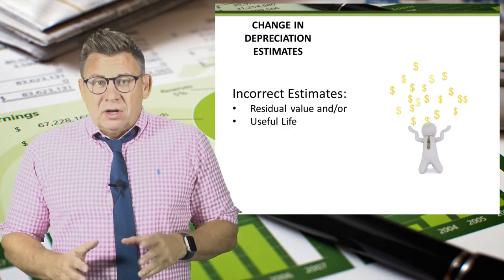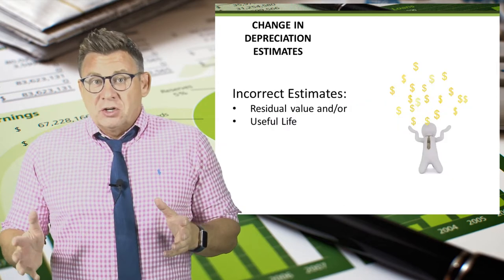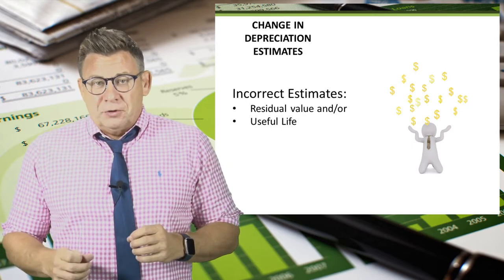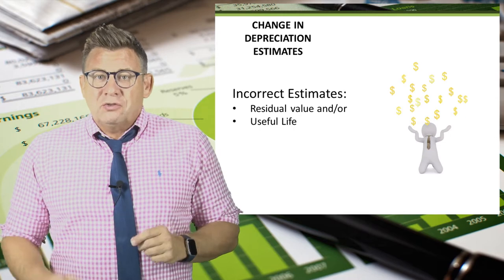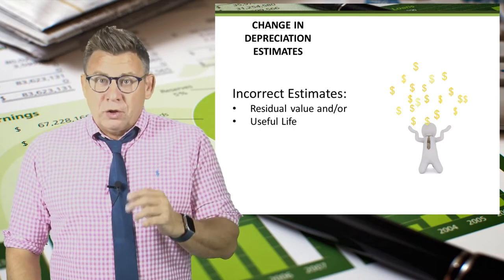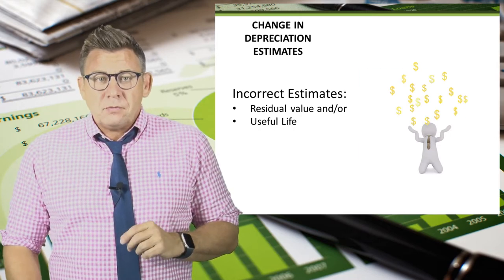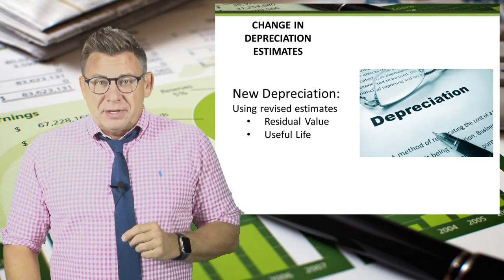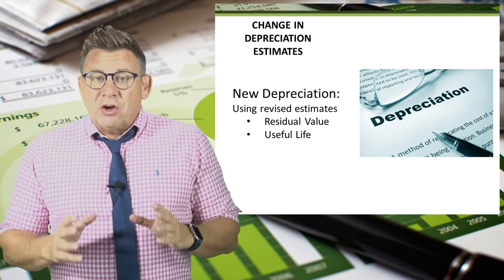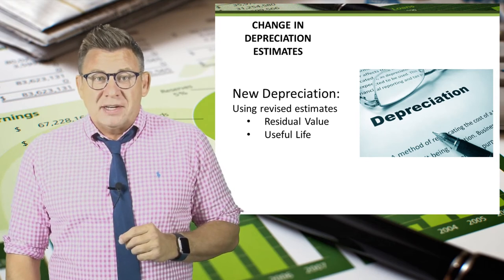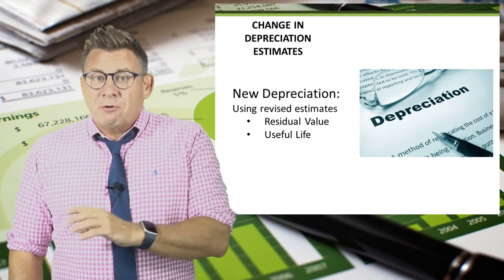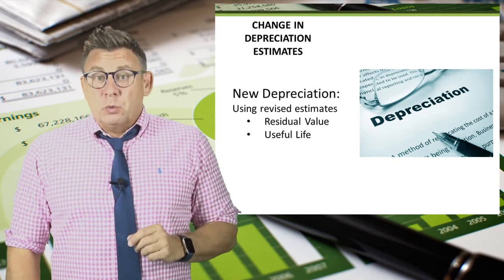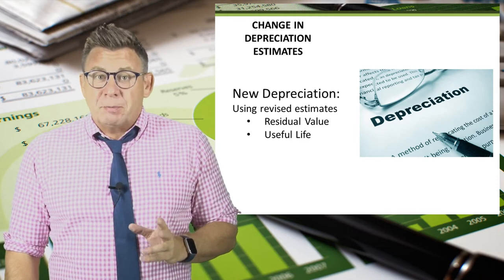Sometimes we discover, after some years of depreciation has passed, that our estimated residual value or our estimated useful life, or both, are wrong. When this happens, a company might revise its estimates and calculate new depreciation expense in the current period and forward. We never go back and recalculate depreciation expense for past years.